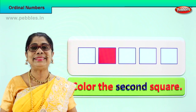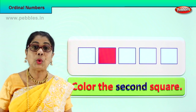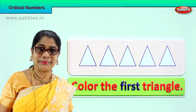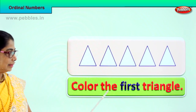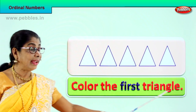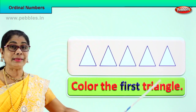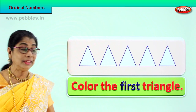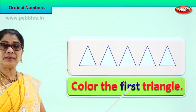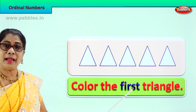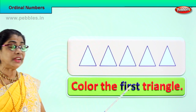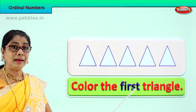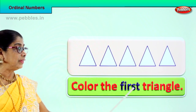Did you enjoy the exercise? Let's get on with another new exercise. Color the first triangle. There are five triangles here. We are asked to color the first triangle. Spell first: F-I-R-S-T. First. The first one. Spell first: F-I-R-S-T. First. Color the first triangle. Let's color this triangle — this is the first triangle.